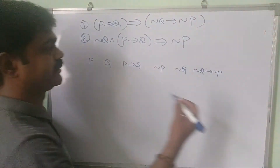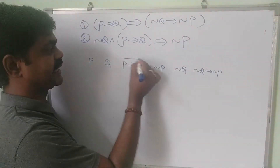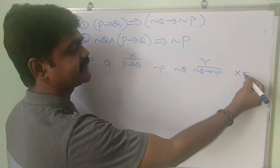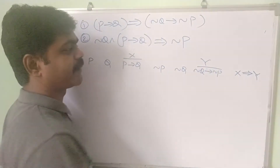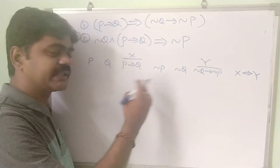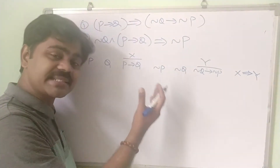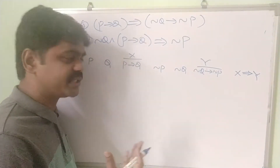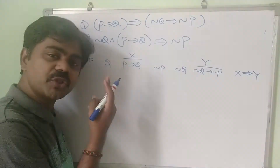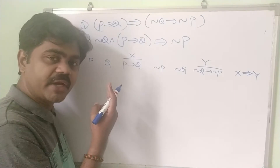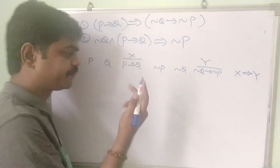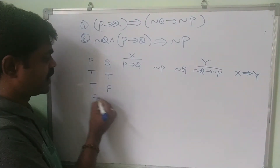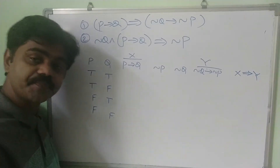Let me call p implies q as X, and ¬q implies ¬p as Y. I need to show X is tautologically implied to Y — meaning I should get all truths. I have only two variables p and q, so I get 2² = 4 truth value combinations: TT, TF, FT, FF.